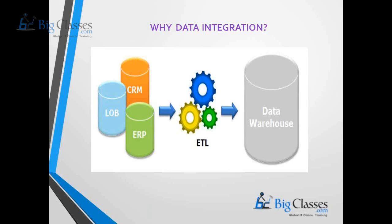The issue we have is how we are going to integrate data from these different applications and create a uniform data store — how we are going to move the data from the OLTP system into the data warehouse. For this purpose, we have a process called the ETL process. The ETL process is a data integration process that provides the mechanism to integrate data from different applications into the unified data store, which we call the data warehouse. So who is going to do this ETL process?